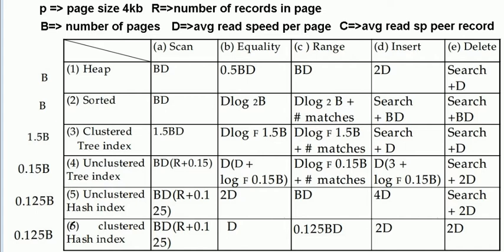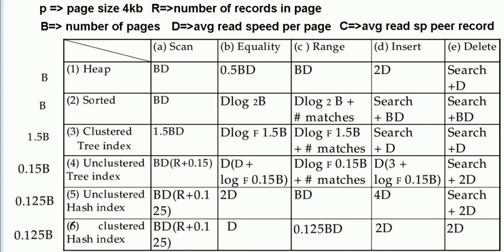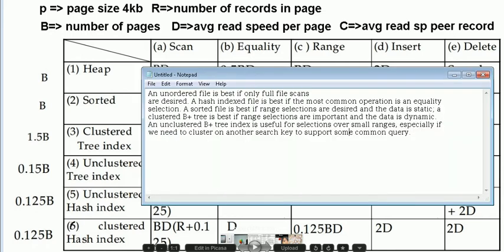So these are the basic things. We have these six structures: the heap, the sorted, the clustered tree, unclustered tree — or B+ tree — the unclustered hash index, and the clustered hash index. We have different comparisons based on scan, equality search, range search, and insert and delete.